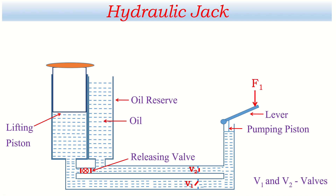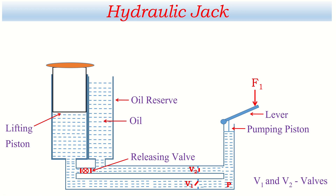When force is applied on the lever of the pumping piston, it exerts pressure in the oil. According to Pascal's law, pressure exerted at any point in a confined liquid transmits perpendicular to all directions — that's why it transmits to the oil reserve as well. But at this time, valve V2 remains closed because it is designed to open only towards the right-hand side, towards the pumping piston. So the pressure cannot open V2. The same pressure moves towards the lifting piston, and valve V1 opens because V1 is designed to open towards the left-hand side, towards the lifting piston.